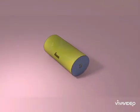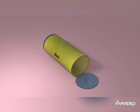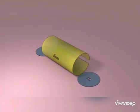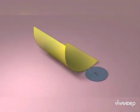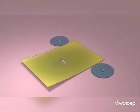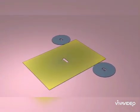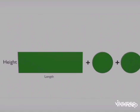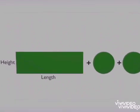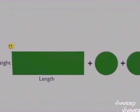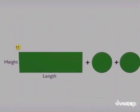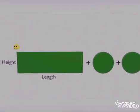As we unfold a cylinder, we get two circles of grayish color and a rectangle of yellowish-green color. By adding the area of these three shapes, we get the total surface area of a cylinder.